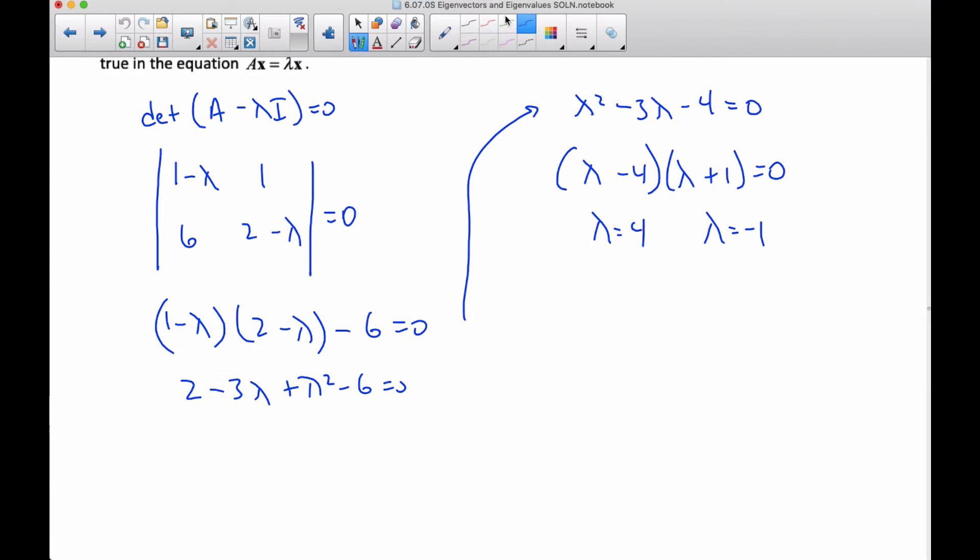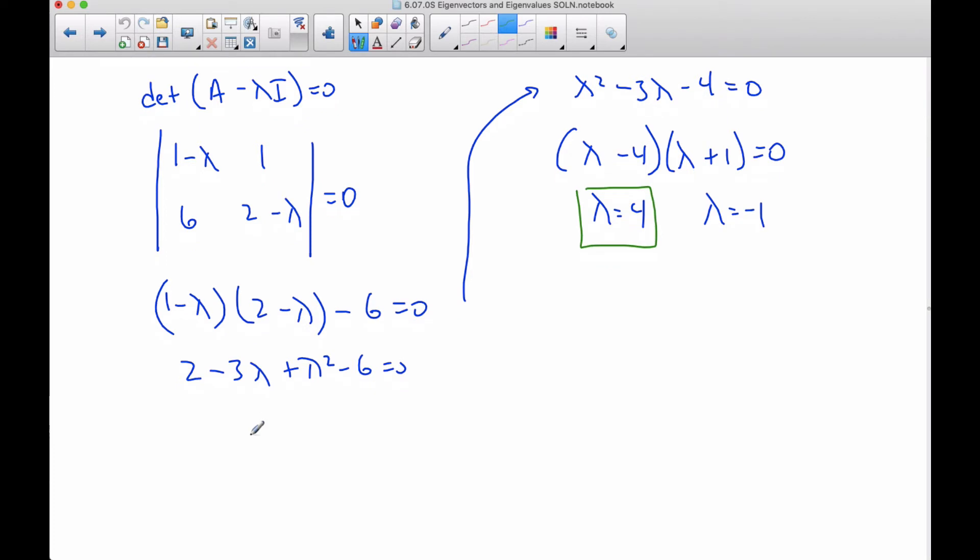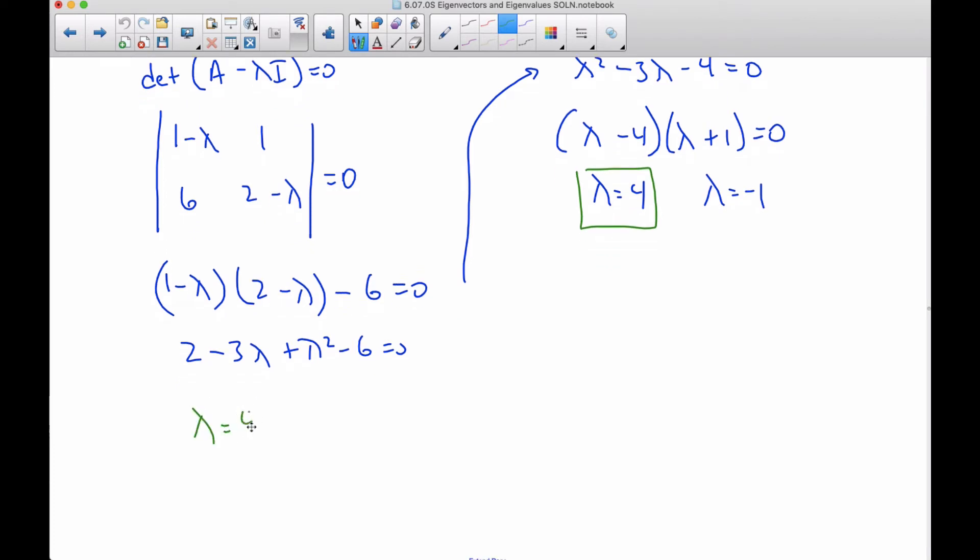So now if I start with my first eigenvalue, lambda equals four, I know I'm going to try and work on the idea that A minus lambda I times X equals zero. So putting the lambda into this matrix here, I get one minus four is negative three, one, six, and then two minus four is negative two. I'm going to take this, multiply it by X, Y, and that will give me zero, zero.